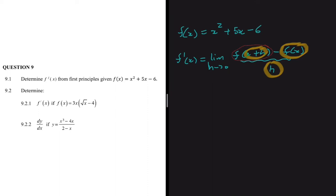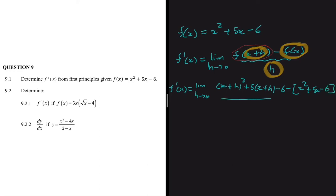So we have f prime of x equals the limit as h turns into 0. Now let's write f(x + h): in place of x² we put (x + h)², then plus 5 times (x + h), then minus 6. And then we subtract the function itself: minus (x² + 5x - 6), divided by h.